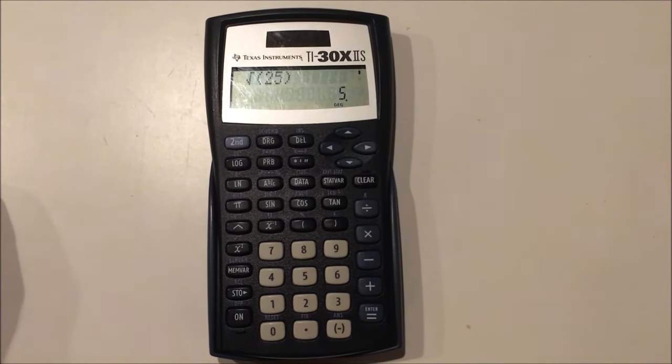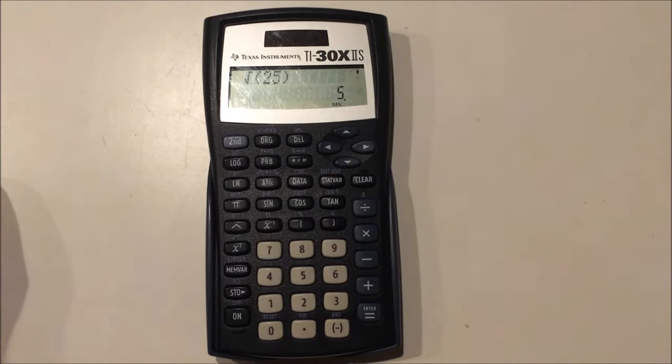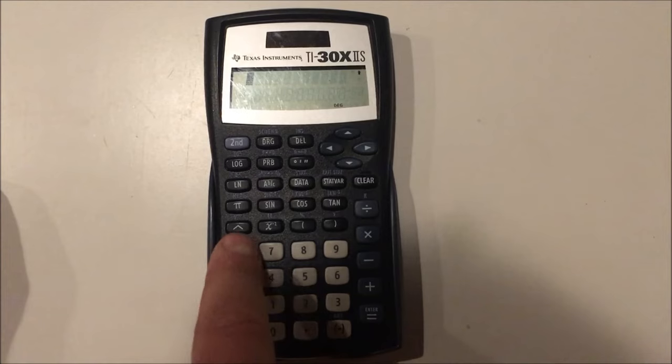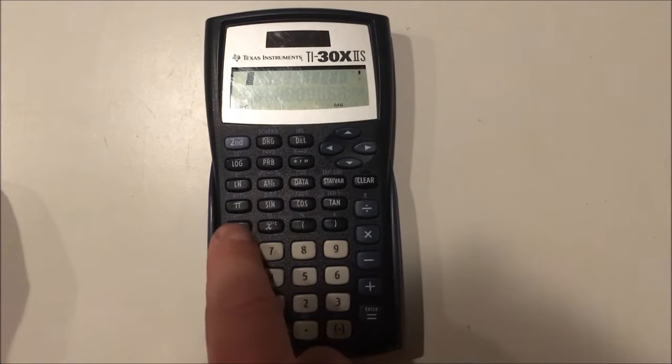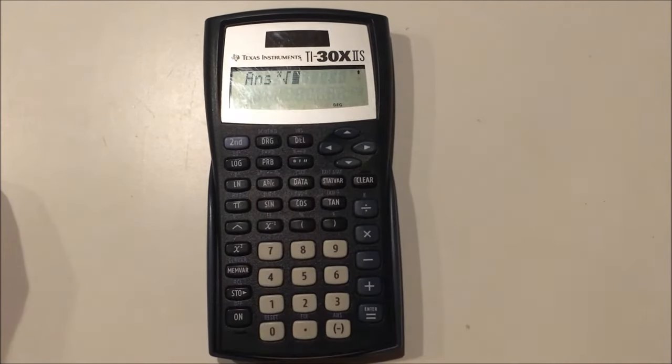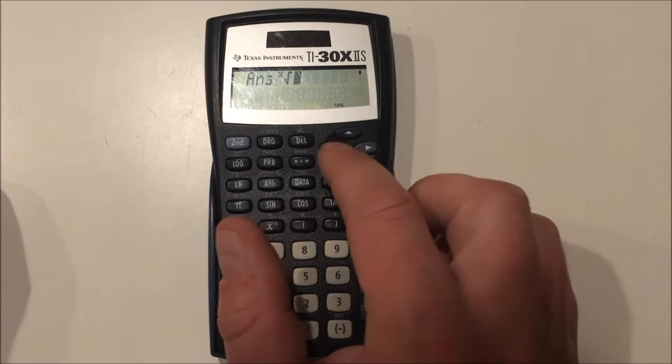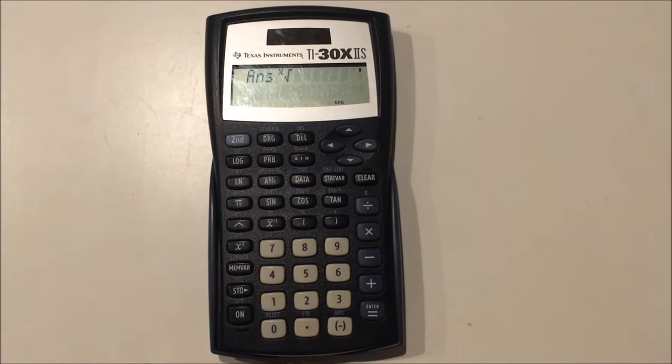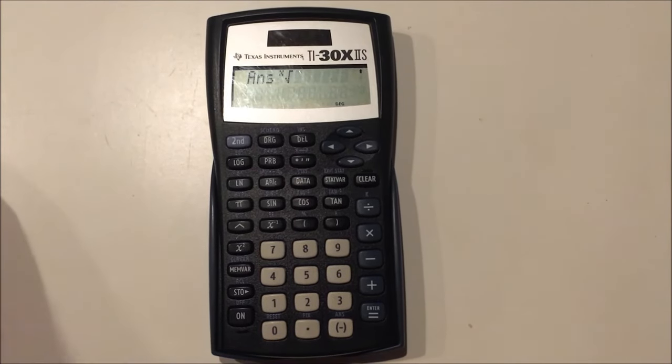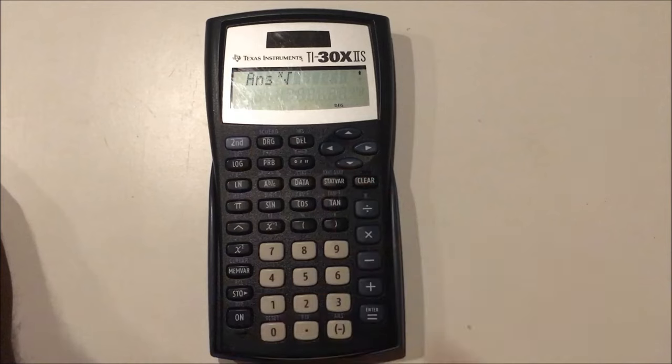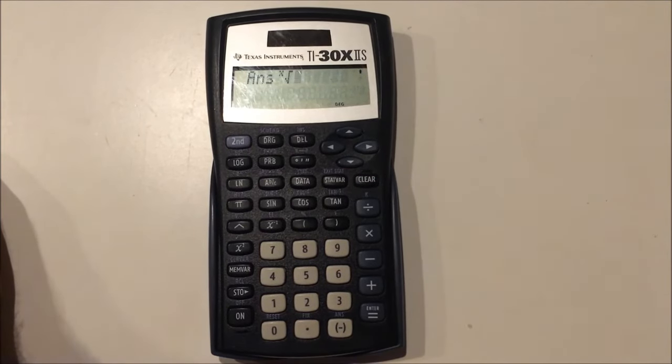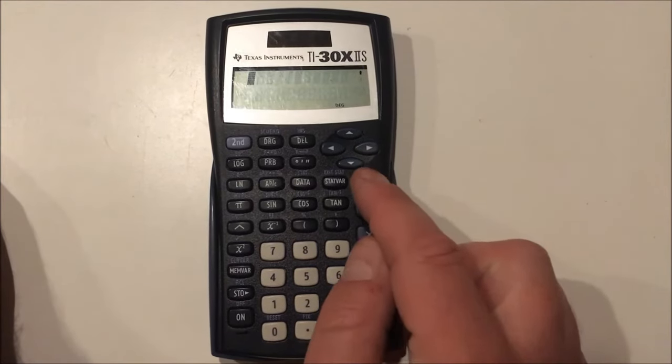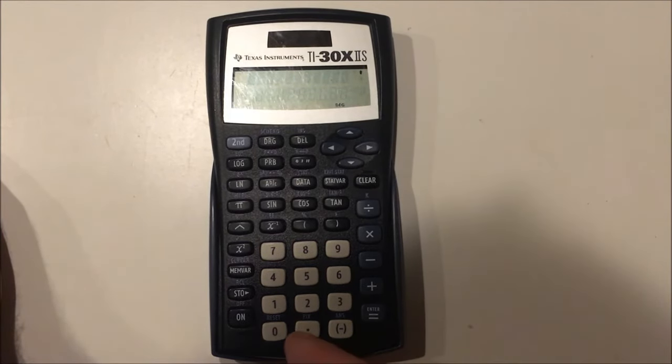Now what if I wanted to take the cube root, or the fourth root, or any higher order root than the square root of a number? Well, I will have to press the second caret button. You see this symbol on top of that button. Now, this calculator requires you to put what degree root you want before you press that button. So as you can see, if I don't press anything, it is going to treat your previous answer as that degree, and we definitely don't want that.